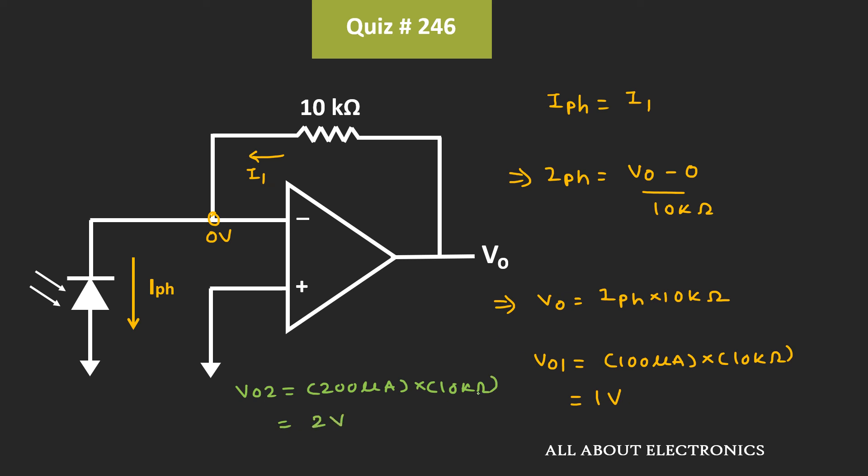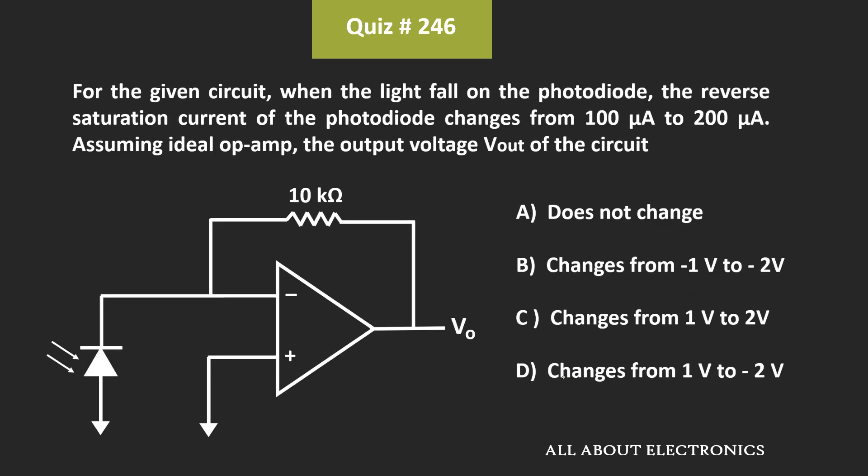That means when the light falls on this photodiode, then the output voltage will increase from 1V to 2V. That means we can say that for the given question, C is the correct answer.